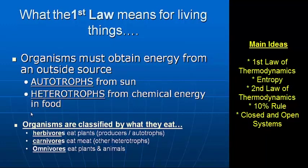We classify heterotrophs based on what they eat. An herbivore eats plants — think of herbs, plants. Plants are classified as producers or autotrophs. Carnivores eat only meat — those are also heterotrophs.